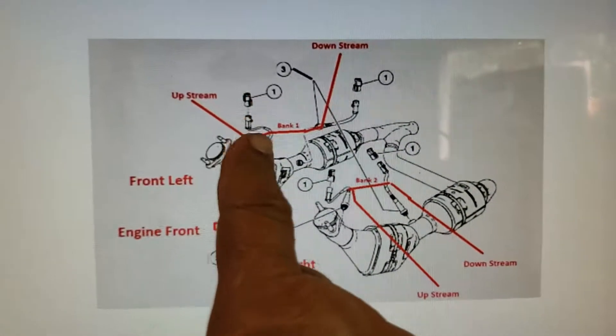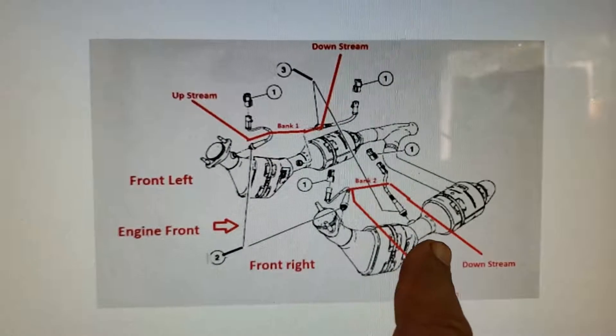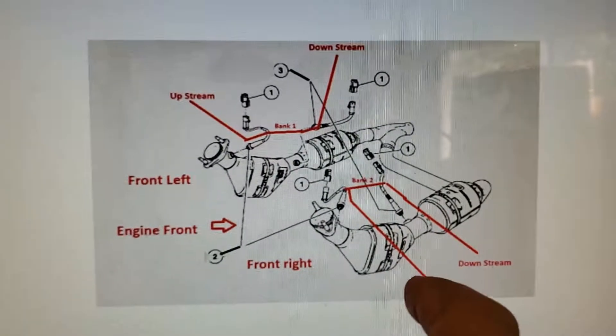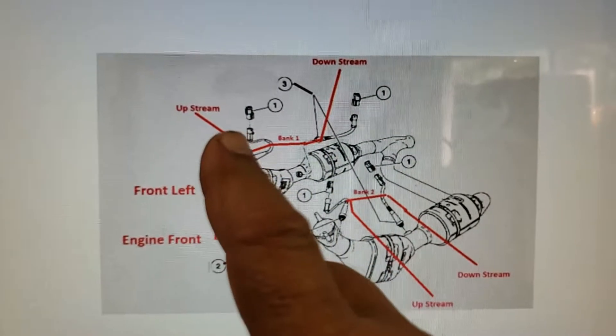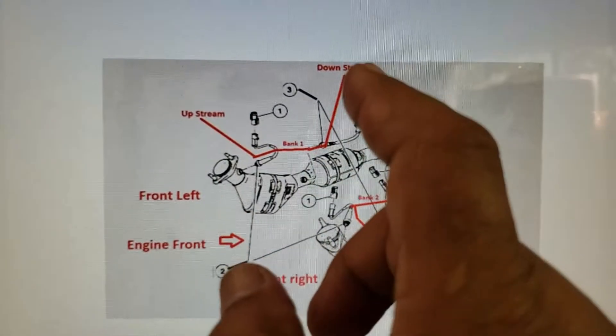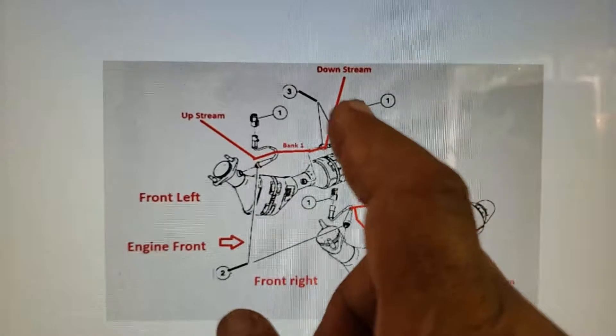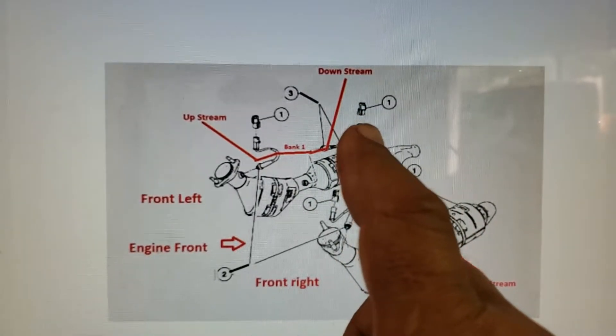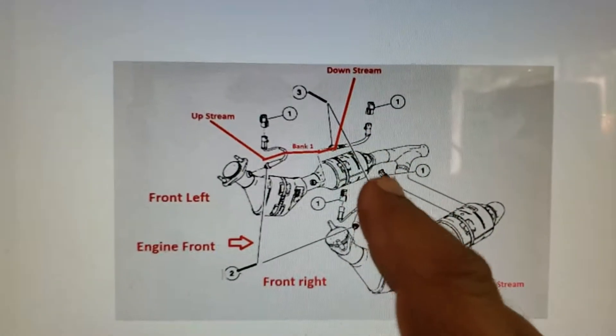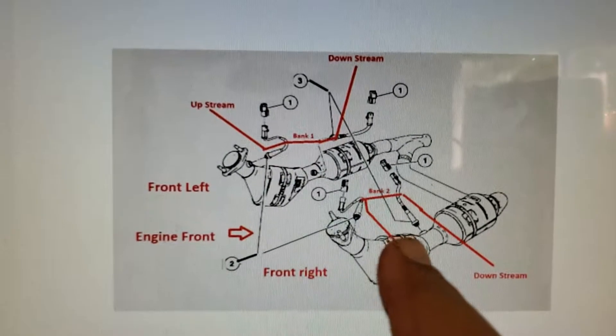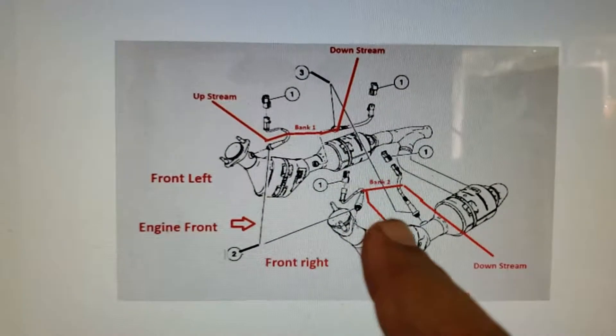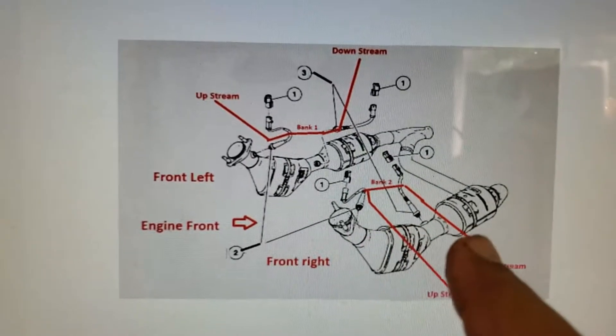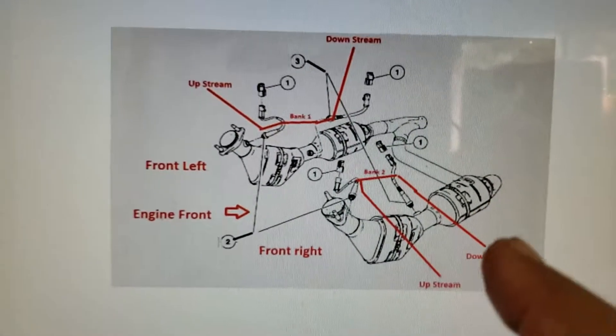So stand in front of the truck, bank 1, right side bank 2. Then as far as your sensor goes, bank 1 upstream is this one here. Bank 1 downstream is the one behind the catalytic converter. Same thing applies to bank 2. The one above the catalytic is upstream, and the downstream is after the catalytic converter.